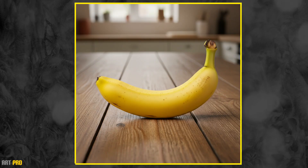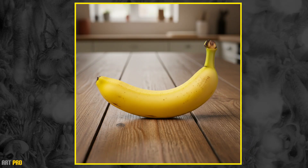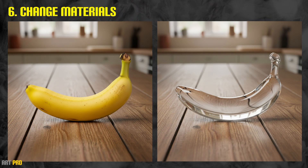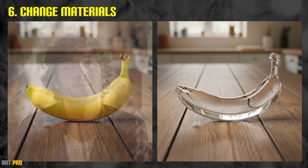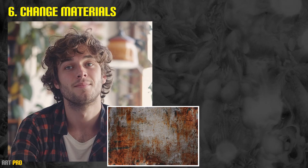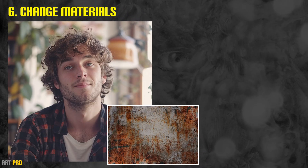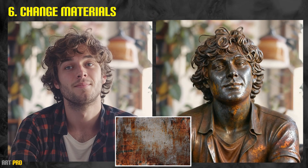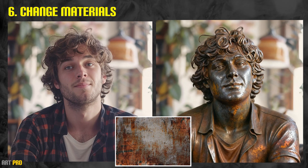Let's look at other functions that are infinitely more complex, almost impossible to edit manually, such as changing materials. I asked it to edit the banana while keeping the entire environment as if it were made of glass. But we can go further — I have this image of a boy, and I tried giving it a rusty metal texture, asking it to apply it on the model as if it were a statue. I find it amazing how well it recreates the textures and how it adapts to the shapes of the original model, also respecting the environment and the lighting of the scene.